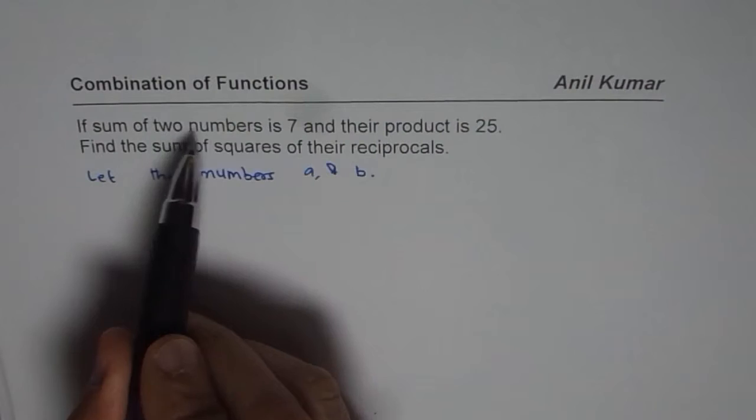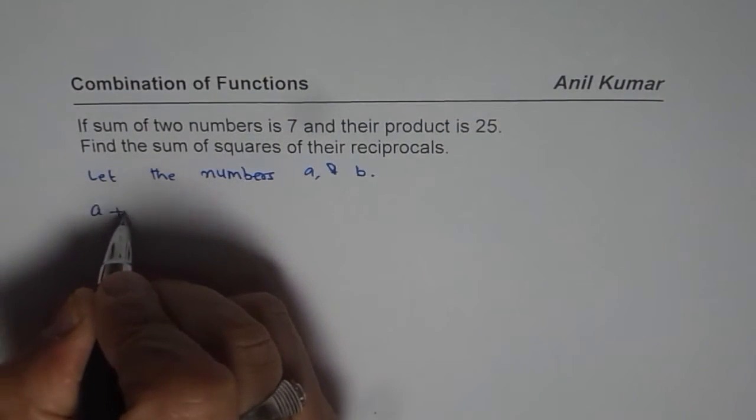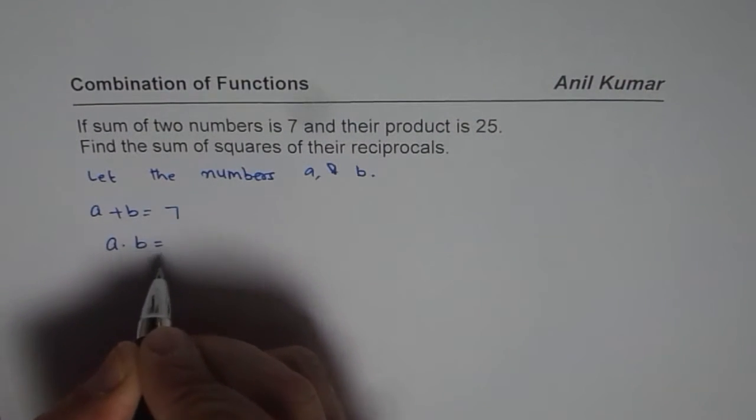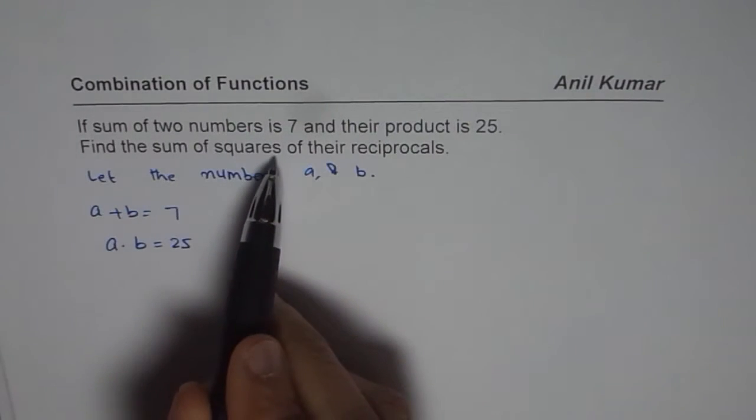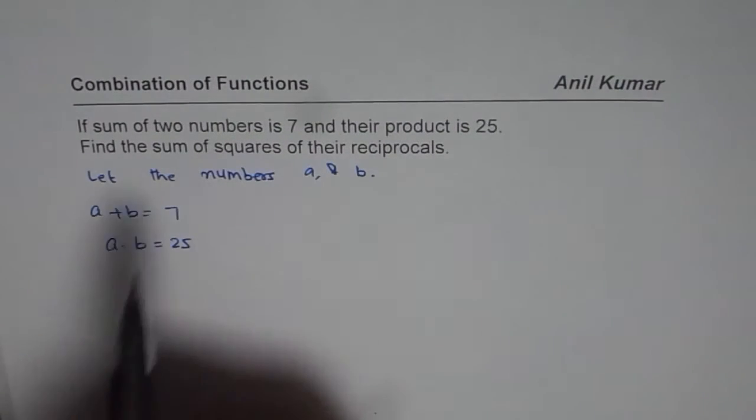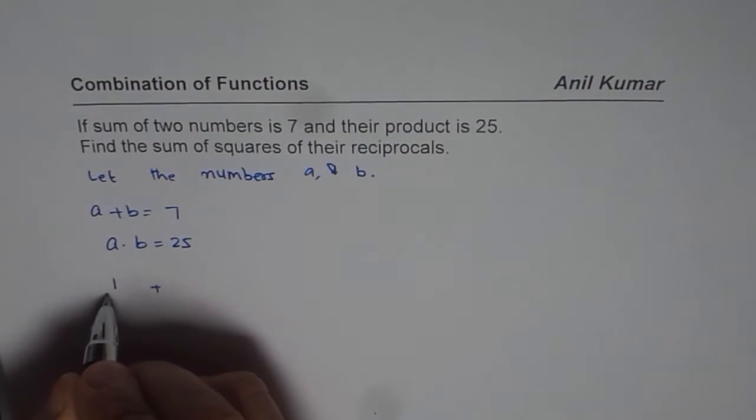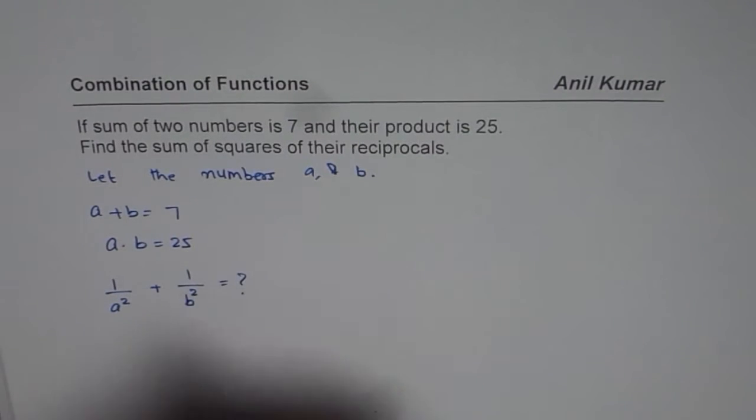If sum of two numbers is 7 and their product is 25, that means A plus B is given to us as 7 and A times B is given as 25. Find the sum of squares of their reciprocals. What does that mean? We have to add squares of their reciprocals: 1 over A squared plus 1 over B squared. This is what we need to find.